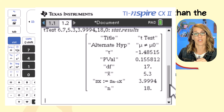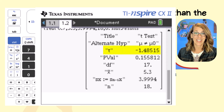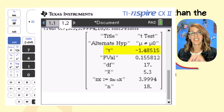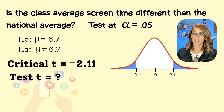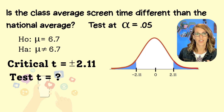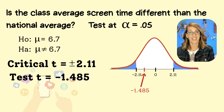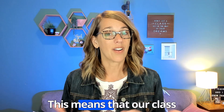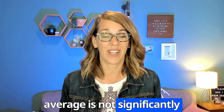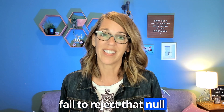Let's use this result to draw our conclusion. The test T tells us we are negative 1.485 standard deviations from 6.7. We needed our sample average to be at least 2.11 standard deviations away, but we're only 1.485 away. This means our class average is not significantly different, and we fail to reject the null hypothesis. Subscribe for more videos like this one.